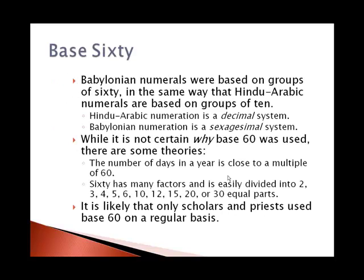Babylonian numerals were based on groups of 60, and it was called a sexagesimal system. It worked in the same way that the decimal system of Hindu-Arabic numbers we use is groups of 10. They use groups of 60.